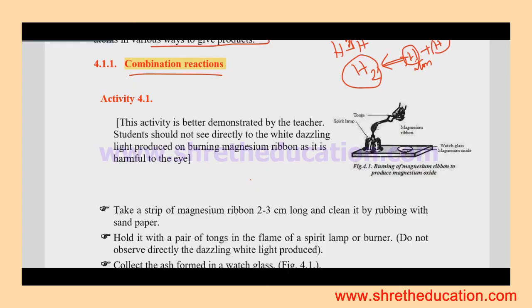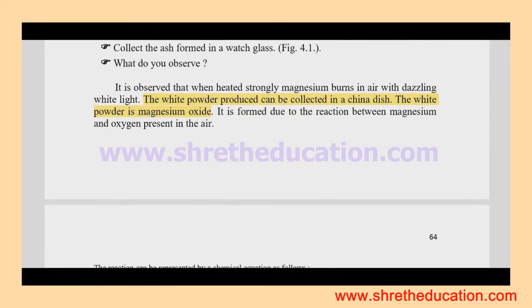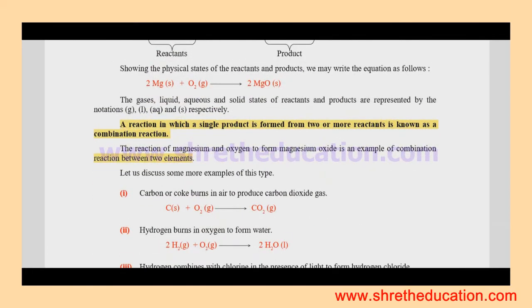Hi students, so now we'll see different types of chemical reactions. We'll focus on combination reactions. The definition of a combination reaction is a chemical reaction in which a single product is formed from two or more reactants.